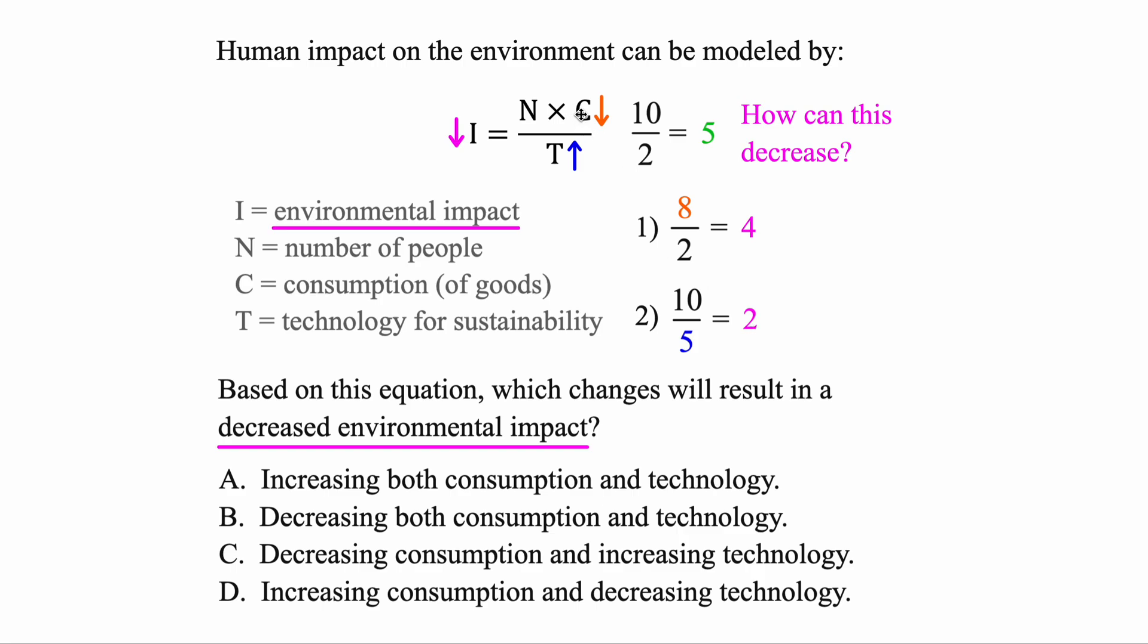Next, we want to find which answers talk about both of these things happening. Either N or C becoming smaller, and T becoming bigger. But the one that does that is the third option.